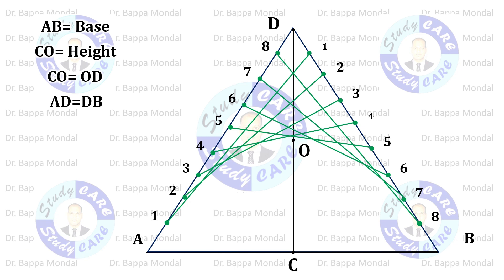Now using a French curve, connect point A along with all intersection points through O until point B. In this way we will get the parabola by the tangent method.